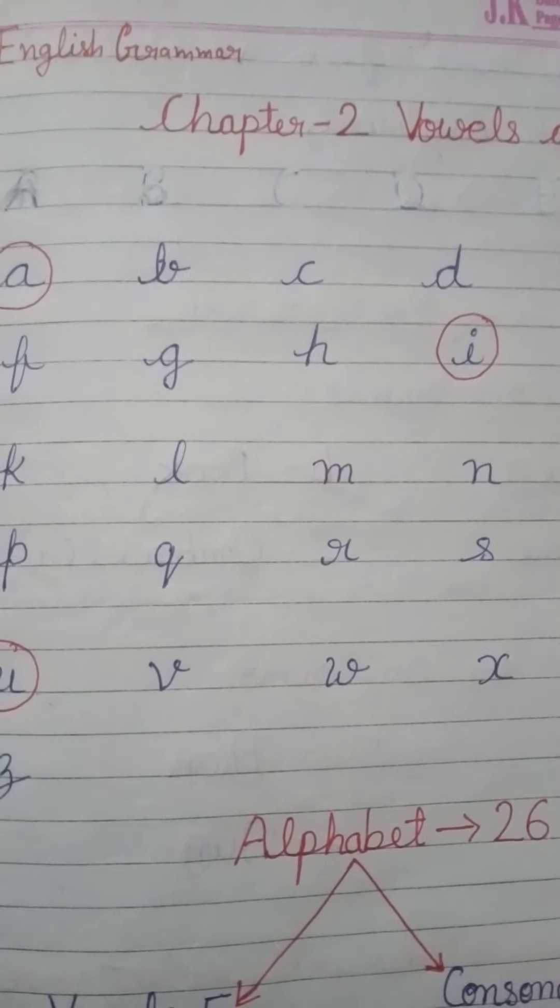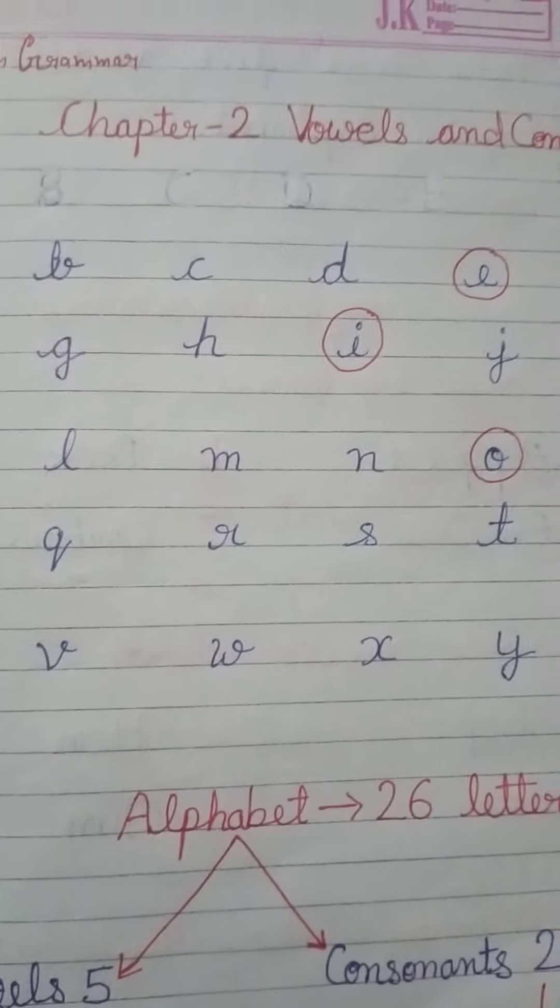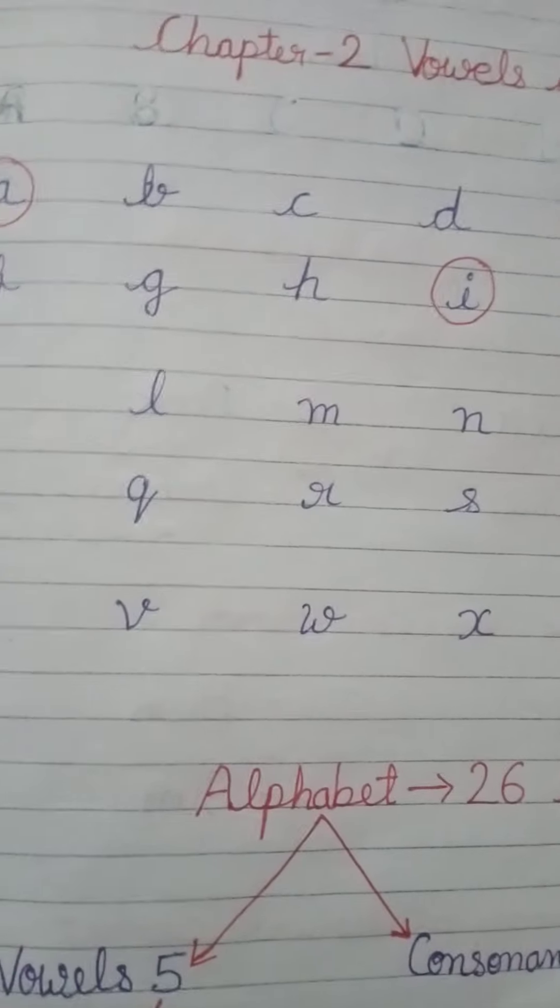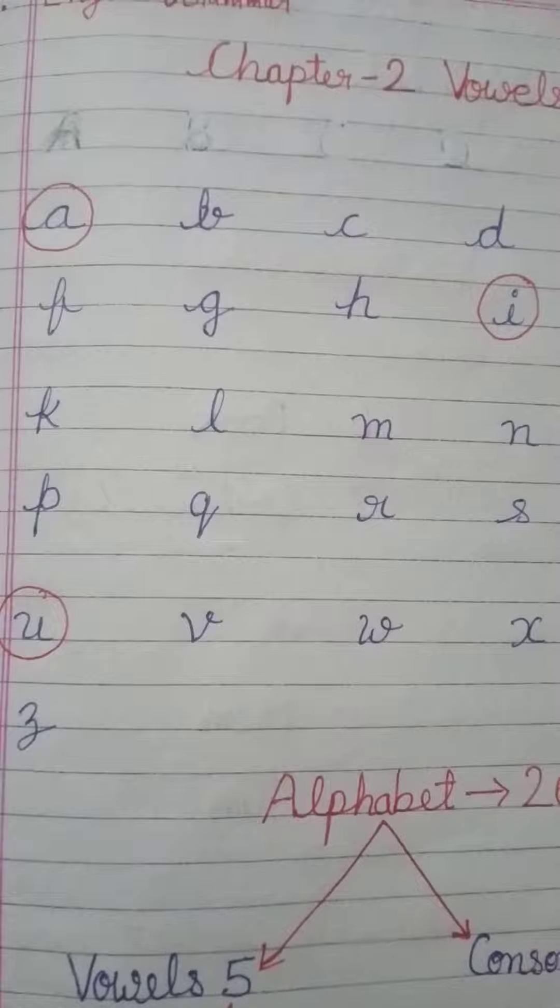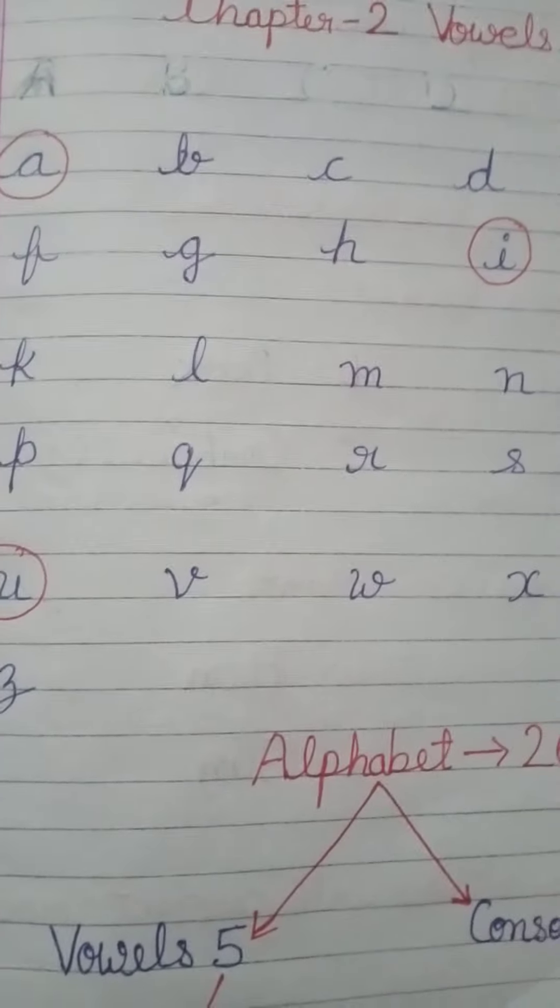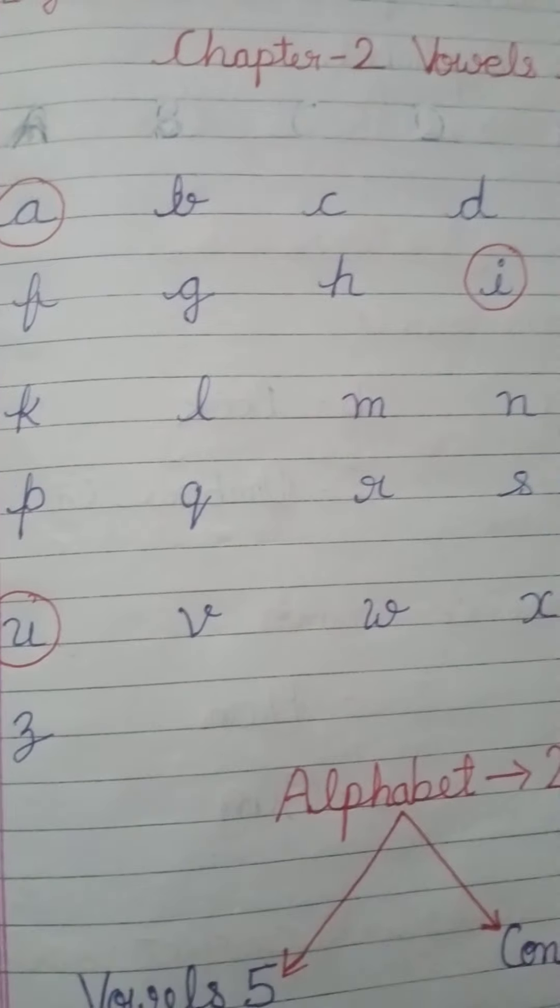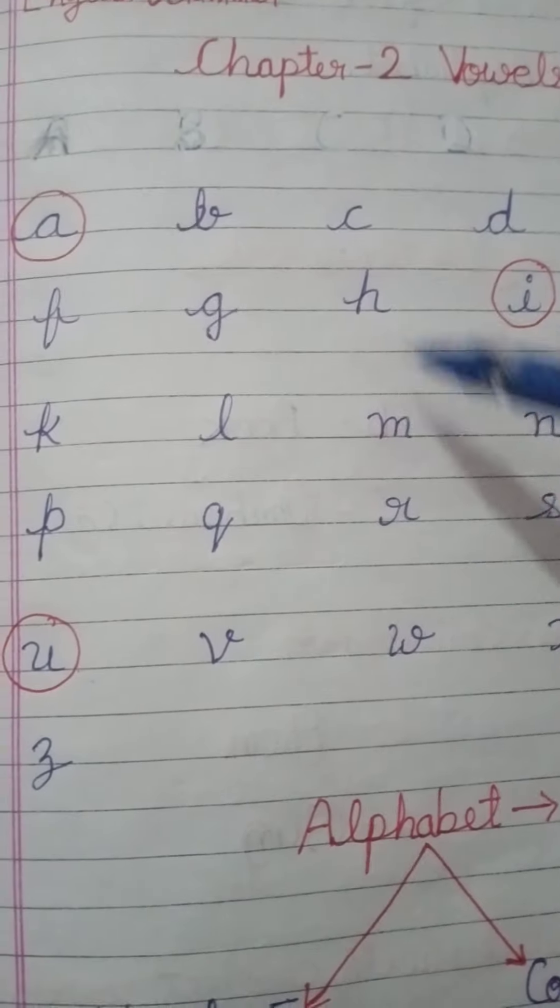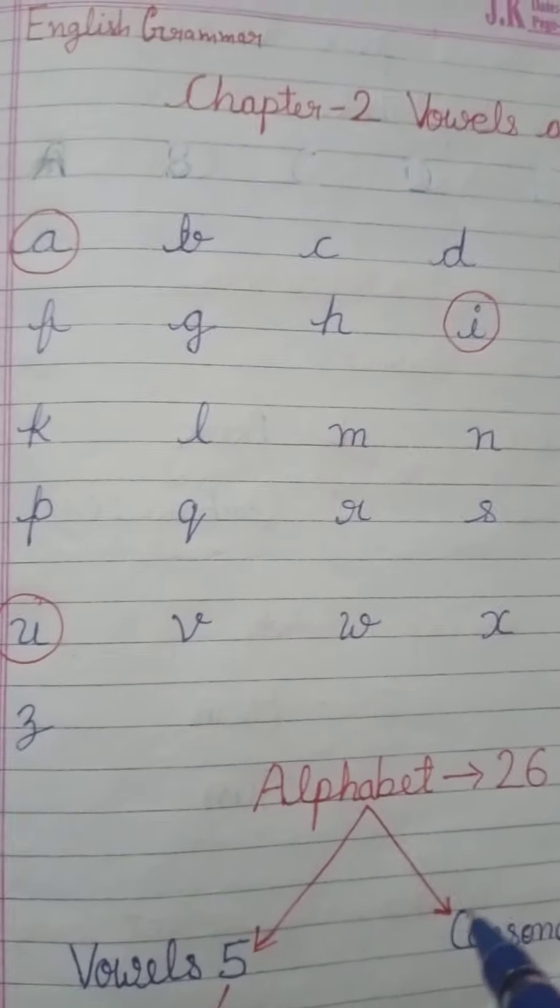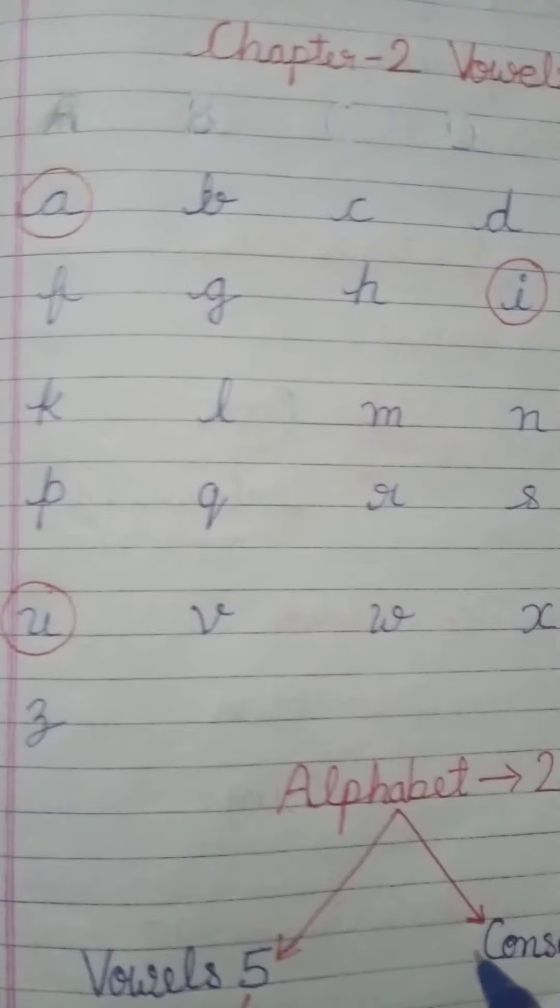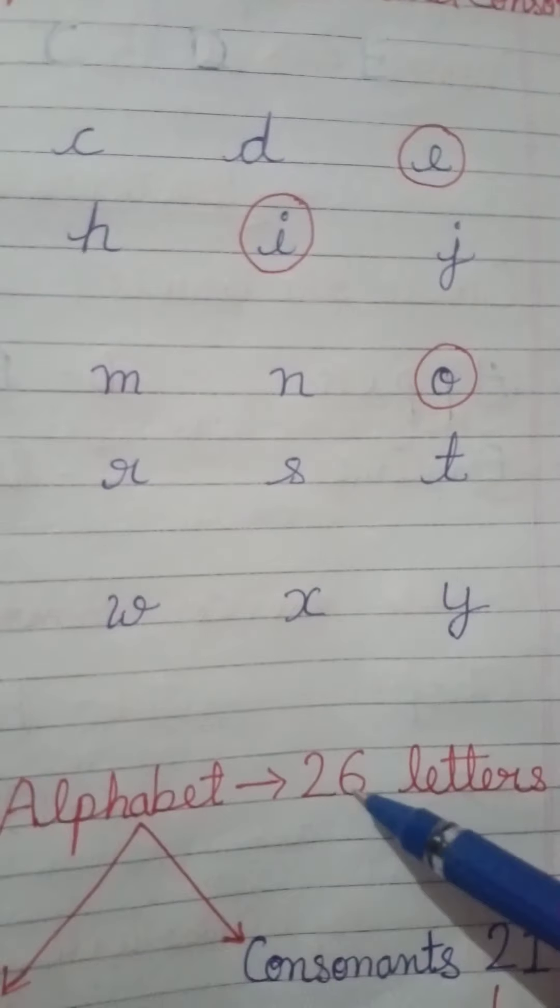First of all, we'll see alphabets and then we'll read what are vowels. I have read the last chapter that alphabets are called A to Z, which are twenty-six. And now we'll see vowels. What are vowels? Alphabets, 26 letters.